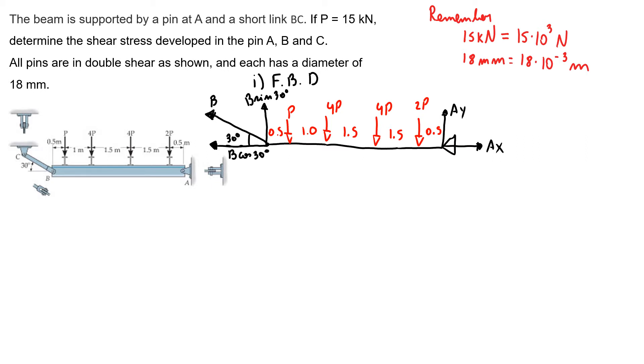Now to find my reaction in B, I have my sum of moments around A counterclockwise is positive, equals zero. So note that all the forces, they are making a positive moment around A. So 2P times 0.5 plus 4P times 2, plus 4P times 3.5 plus P times 4.5